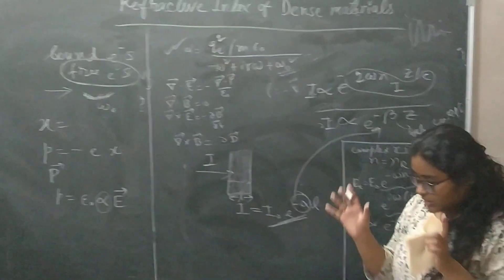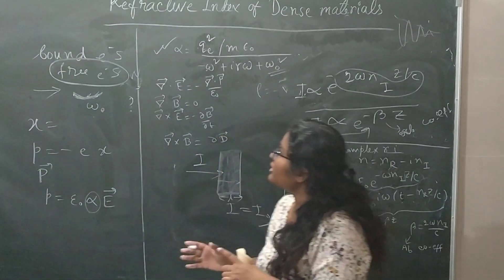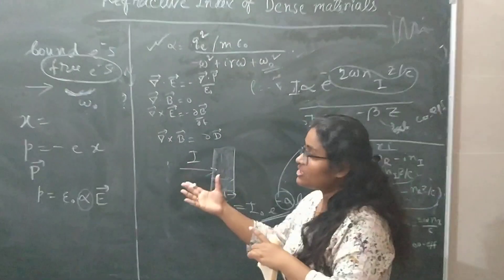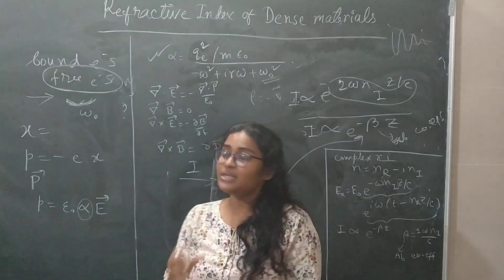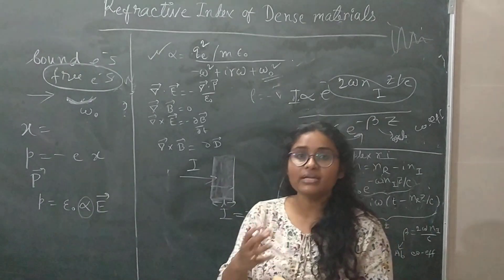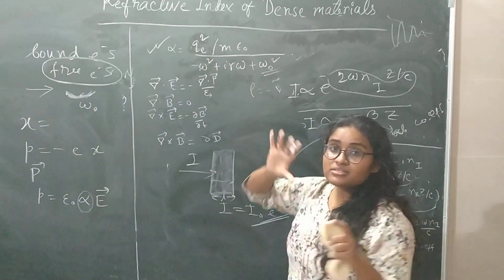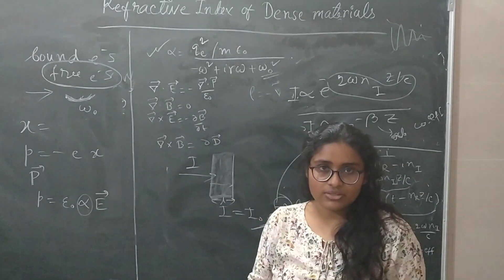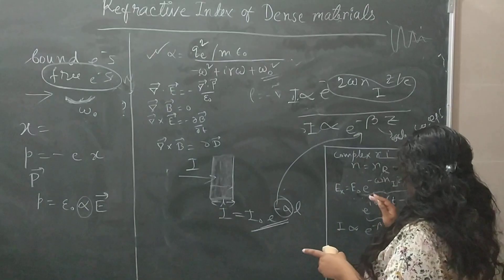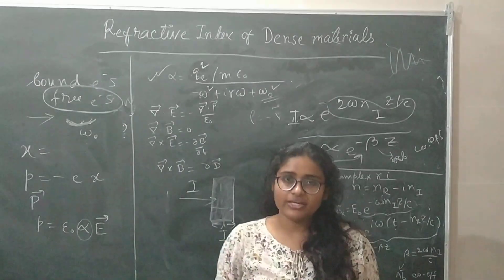So whenever anyone asks what you mean by refractive index, you should say it represents the kind of interaction happening between light or EM radiation and the electrons inside the matter — how much they are interacting. This originates from alpha, the properties of the material, which is why different materials have different refractive indices, and it is not constant but varies depending on frequency. That's all for today. Thank you.